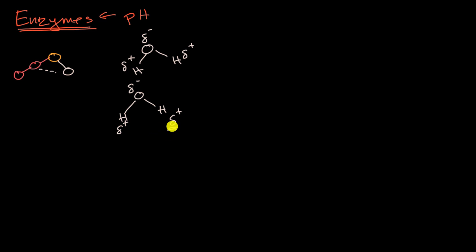This is the Greek lowercase delta for partial charge. So the partially negative ends would be attracted to the partially positive ends of another molecule, and that's what hydrogen bonds are. It's not always between hydrogen and oxygen. In fact, oftentimes it's between hydrogen and nitrogen, which is another electronegative atom.